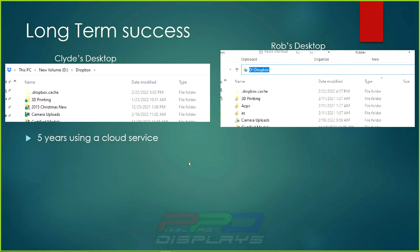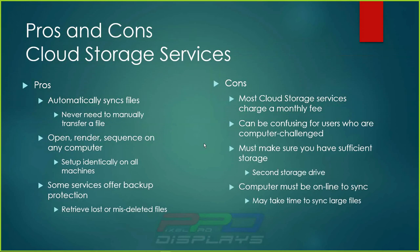When I talk about long-term success, for the past five years Rob and I have been able to easily share files back and forth through a shared folder. He can open and render just as I can, regardless of which computer we're using. Now, one con I should mention: if I open a sequence and make a change, and Rob opens the exact same sequence and makes a change on his machine, there's no way for me to know he's doing that. Whoever saves last — their change is the one that gets saved.